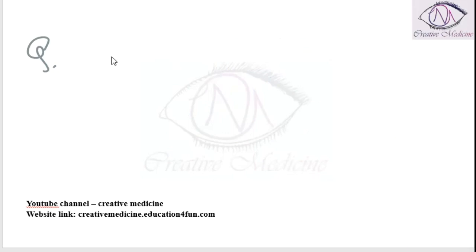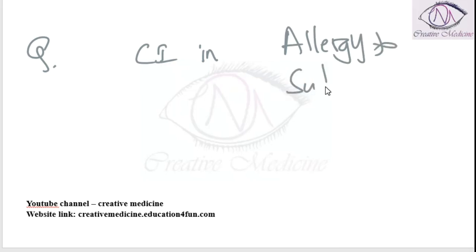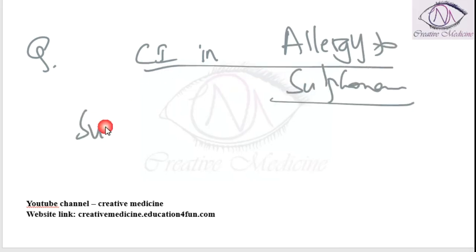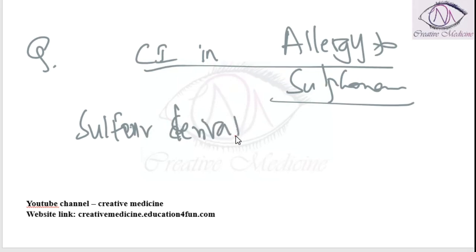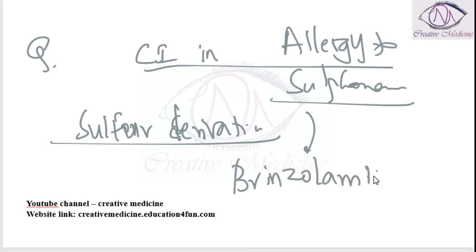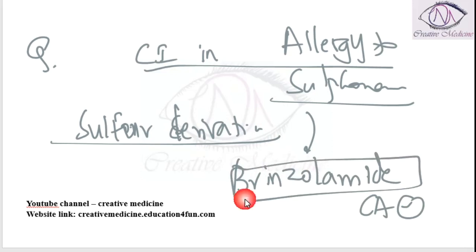Which of the following medications is contraindicated in patients with allergy to sulfonamides? If a patient has allergy to sulfonamides, we should not use any sulfur derivatives. In the anti-glaucoma drugs, brinzolamide is a sulfur derivative — it is a carbonic anhydrase inhibitor which is a sulfonamide derivative — so it is not used.